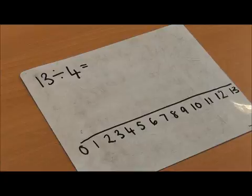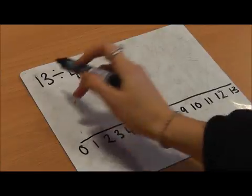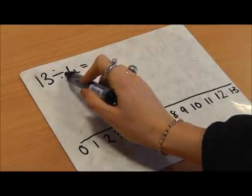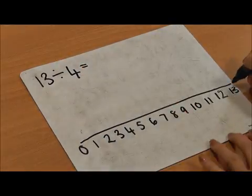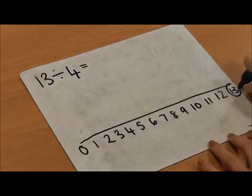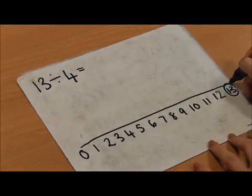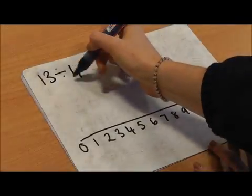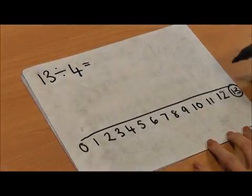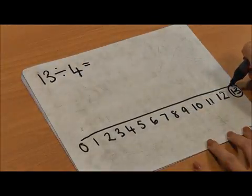Year 3 division: finding remainders using a number line. The calculation is 13 divided by 4. I'm going to find 13 on my number line. I'm now going to find groups of 4 and count back.